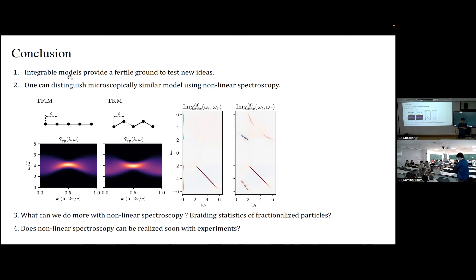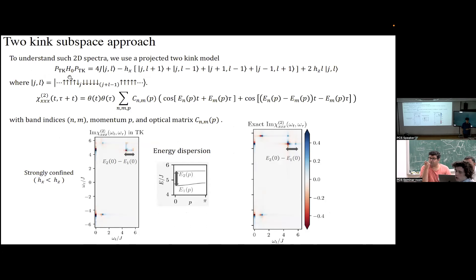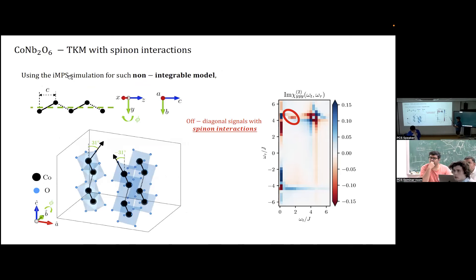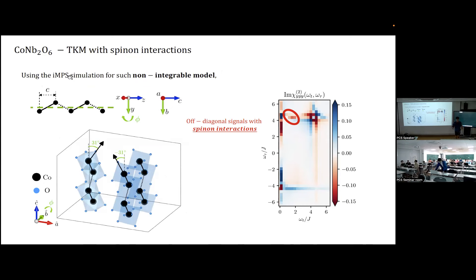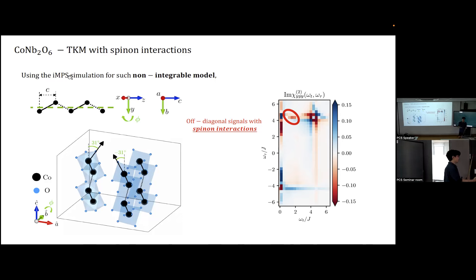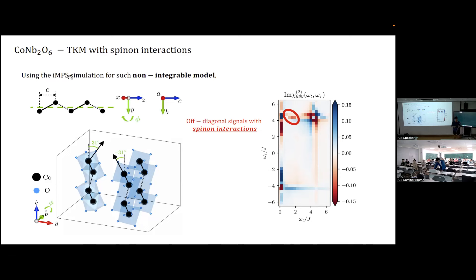Further Q&A on time evolution: without fermionic interaction, the off-diagonal signal is about 50% higher; adding the fermionic interaction term reduces it somewhat. The question of how the signal behaves at very long time evolution was raised. For integrable models, enlarging the system size makes the signal thinner but it doesn't qualitatively change. For non-integrable or chaotic models, signals can blur, but for the integrable case the sharp structure is preserved.